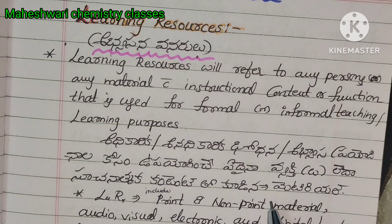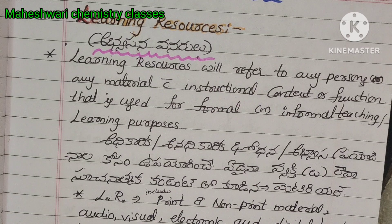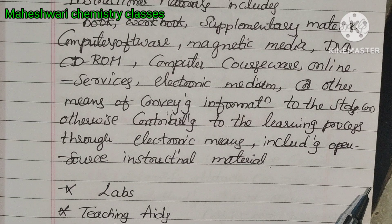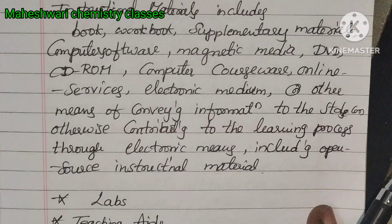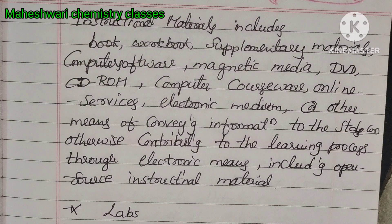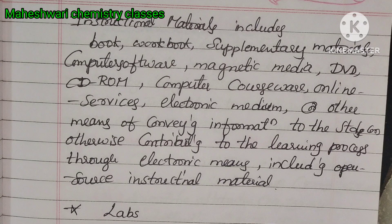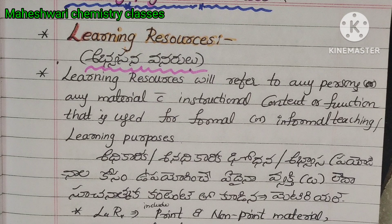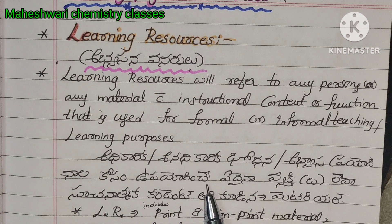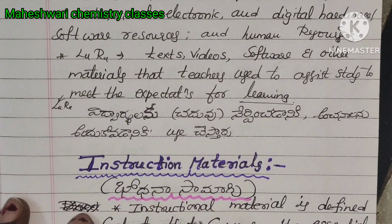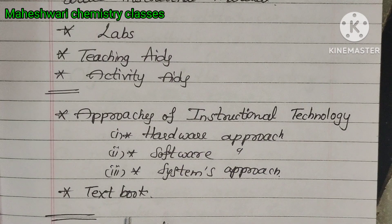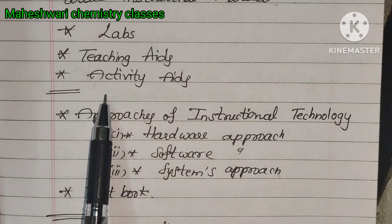In the instructional material, we will not include all materials. Most of them — book, workbook, supplementary material, computer, software. In learning resources there are also materials, but in instructional material, most — about 80% — is instrumentation. In instructional material, we will be able to use the lab, teaching aids, activity aids, and topics.